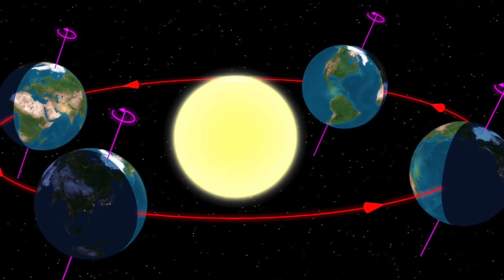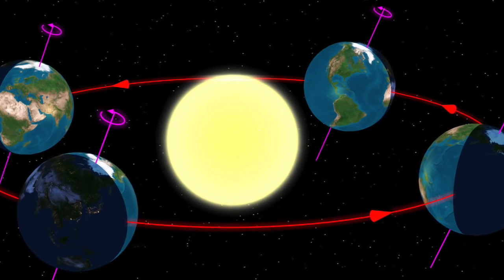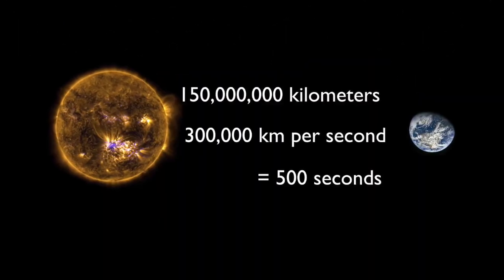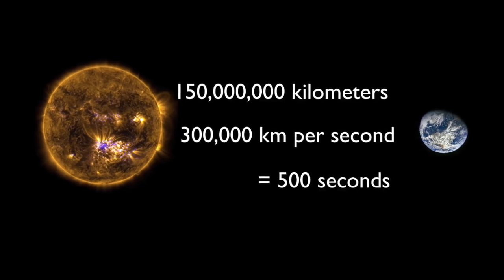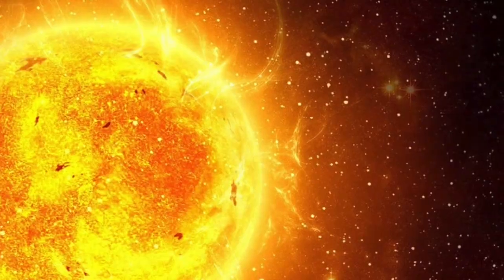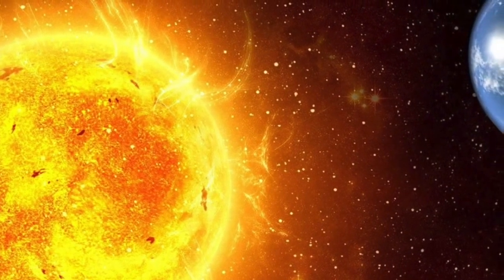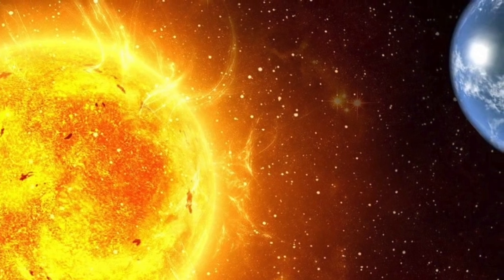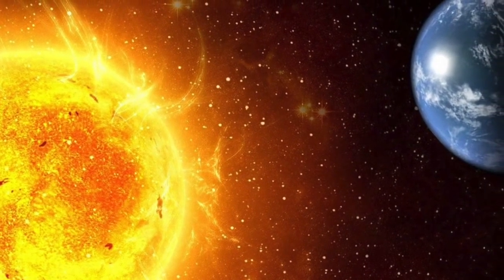Since it is known that light takes 8.3 minutes approximately to travel from the Sun to the Earth, it would have to be presumed that the gravitational attraction is messaged from the Sun to the Earth, and vice versa, within a period of time no shorter than 8.3 minutes also.